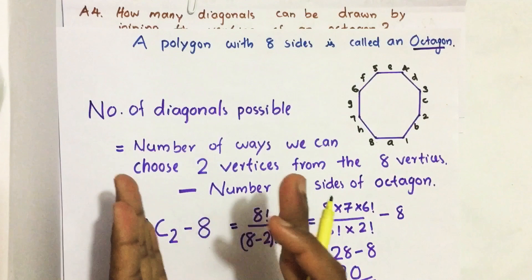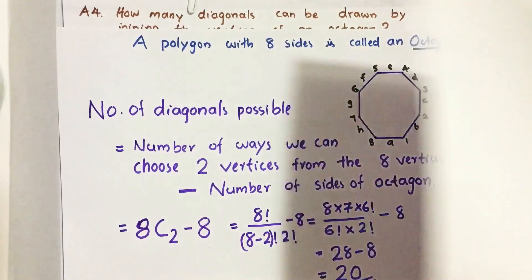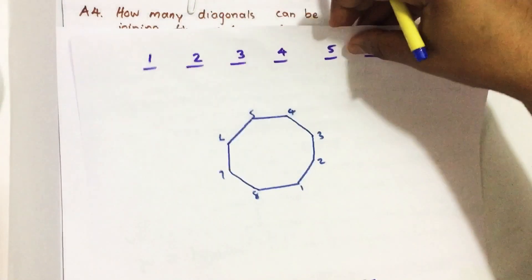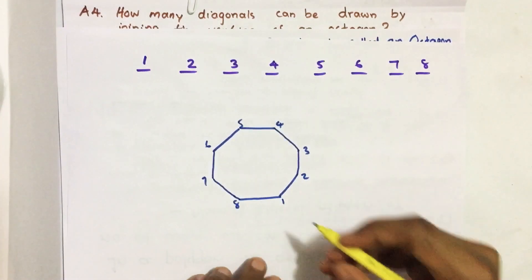If you don't know such equations or combinations, by simply counting also we can find the number of diagonals possible. For that, let us count.